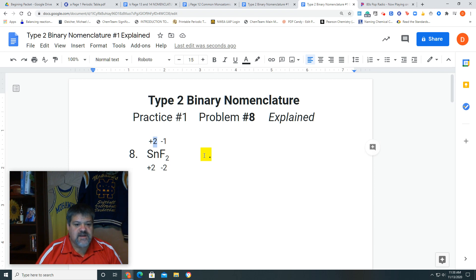In Type 2 nomenclature, we always write a Roman numeral for the metal's charge. In this case, we have tin, then parentheses with Roman numeral II, then we write